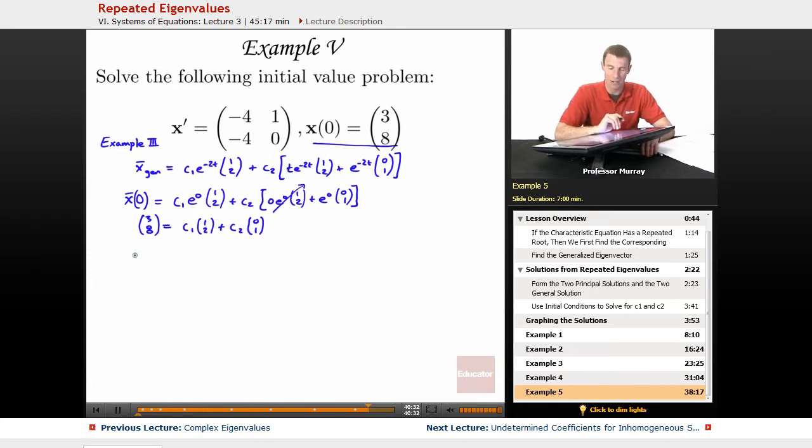So, I can expand this out into two equations if I distribute the c's into the vectors. It looks like I've got c1 plus 0 c2 is equal to 3. And 2 c1 plus c2 is equal to 8. Well, right away I can figure out that c1 is equal to 3. And if I plug in 3 there, I've got 6 plus c2 is equal to 8. So, c2 would have to be 2.